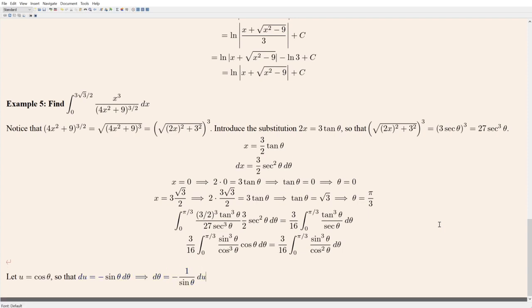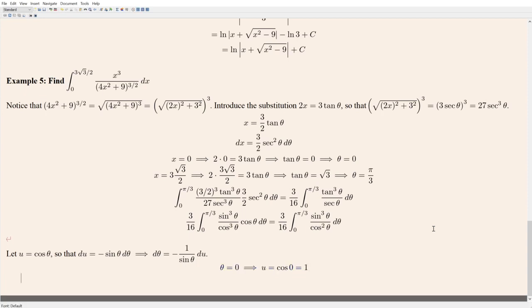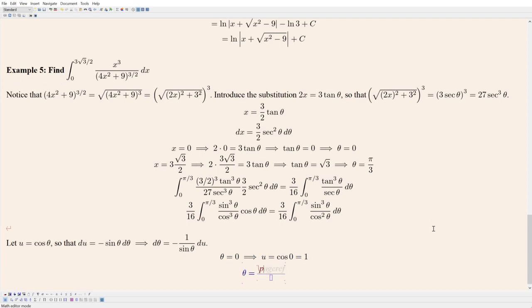So now we're going two substitutions deep, and of course that means we're going to have to deal with our bounds again as well. When theta is equal to zero, that means u, which is cosine theta, is going to be cosine of zero, which is one. And then when theta is equal to pi over three, that means u is going to be cosine of pi over three, which is one half.